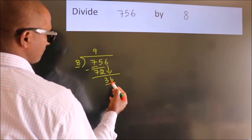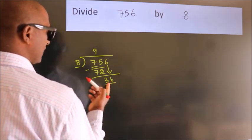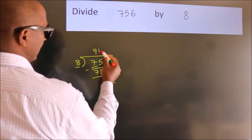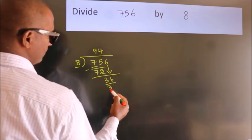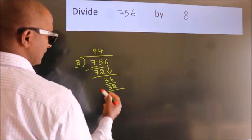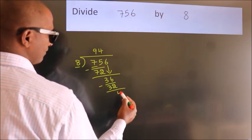So, 36. A number close to 36 in 8 table is 8 fours, 32. Now, we subtract. We get 4.